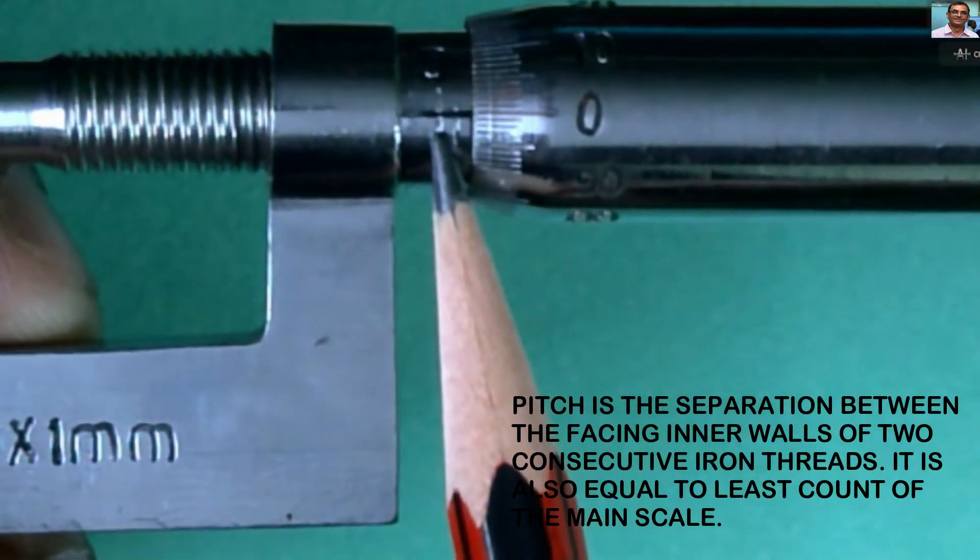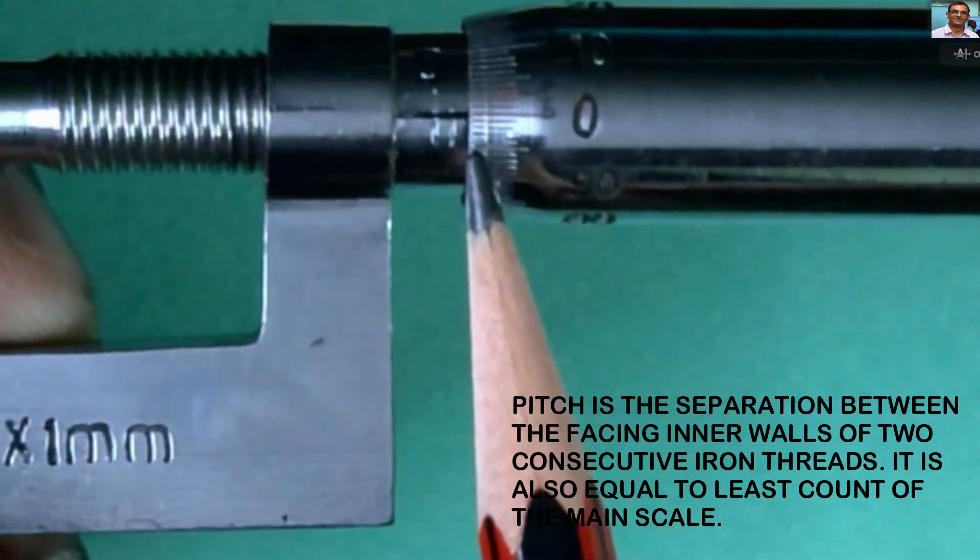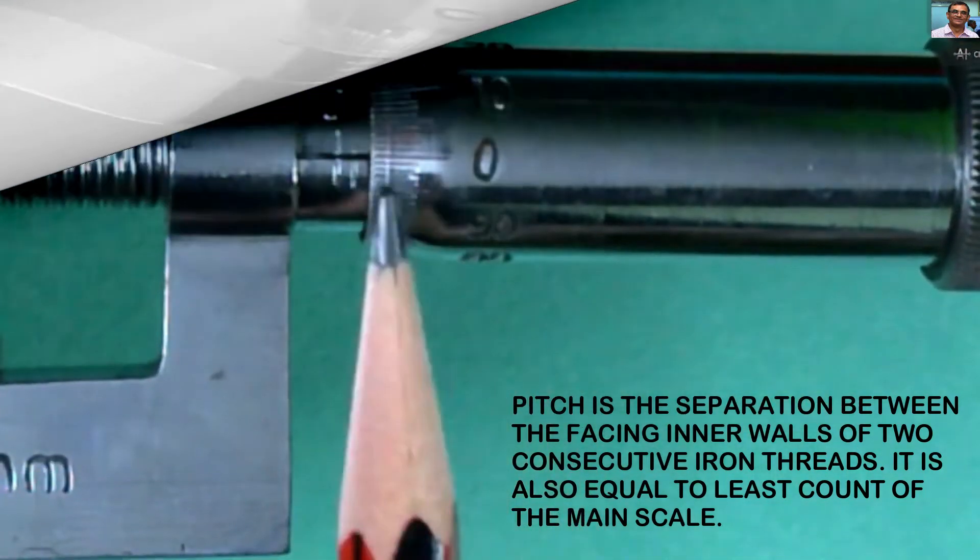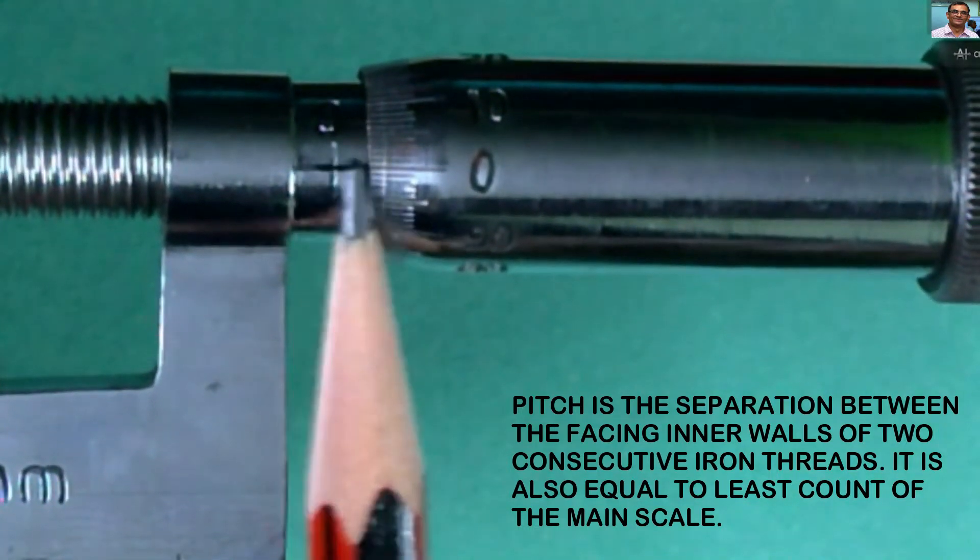This is the zeroth division of the meter scale, and this happens to be the first division. The second division of the meter scale is about to appear. For now, zero of the circular scale coincides with the reference line.